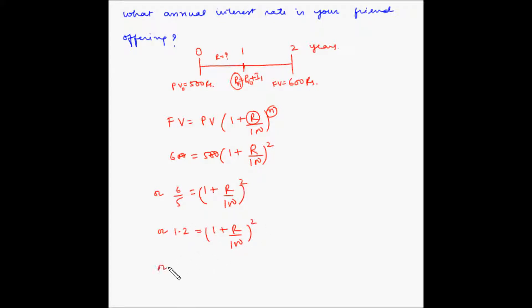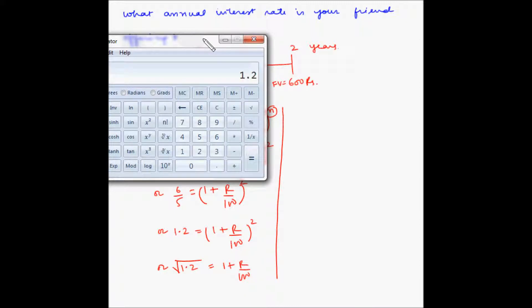So now let's do square root on both the sides. So square root of 1.2 is equal to 1 + r/100. Let me pull my calculator.